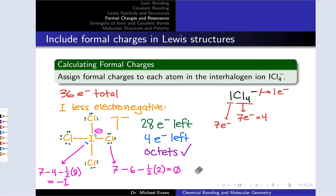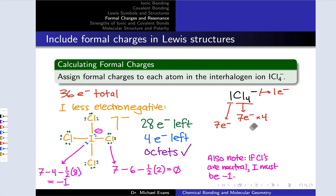Note that we didn't actually need to apply the formula to iodine. As soon as we recognized that all four chlorines were formally neutral, and the molecule has an overall charge of negative one, conservation of charge tells us immediately that the iodine must carry a formal charge of negative one.